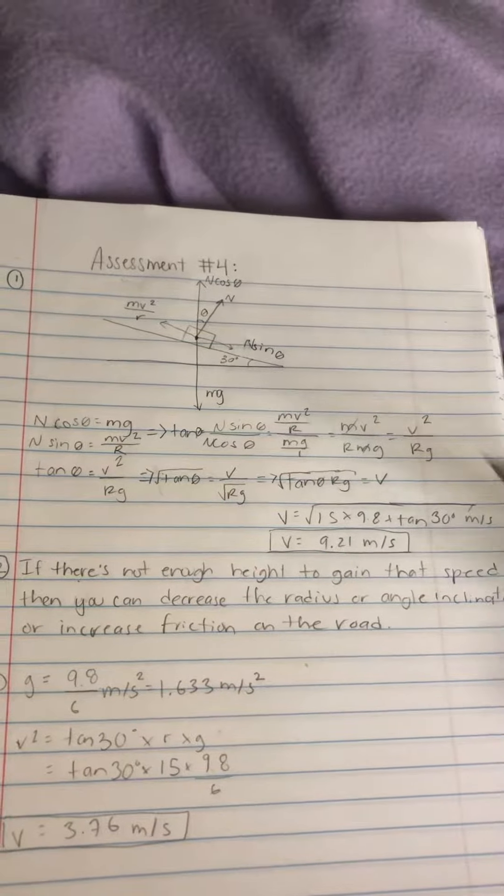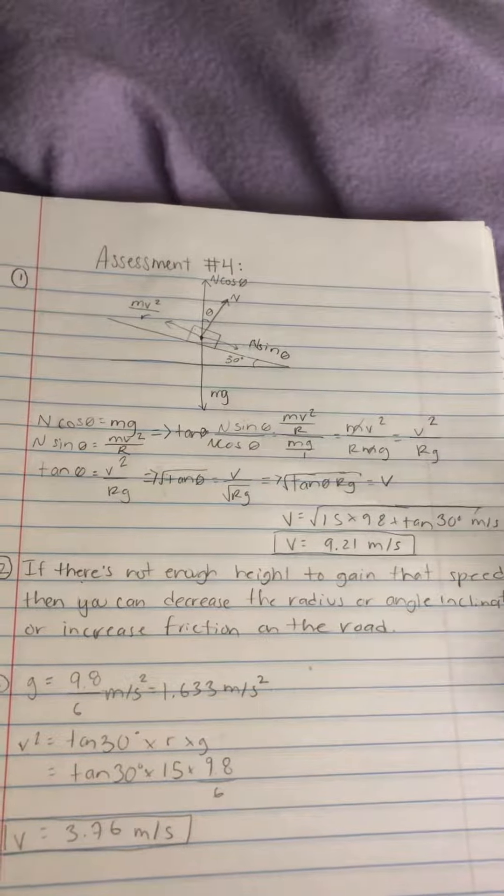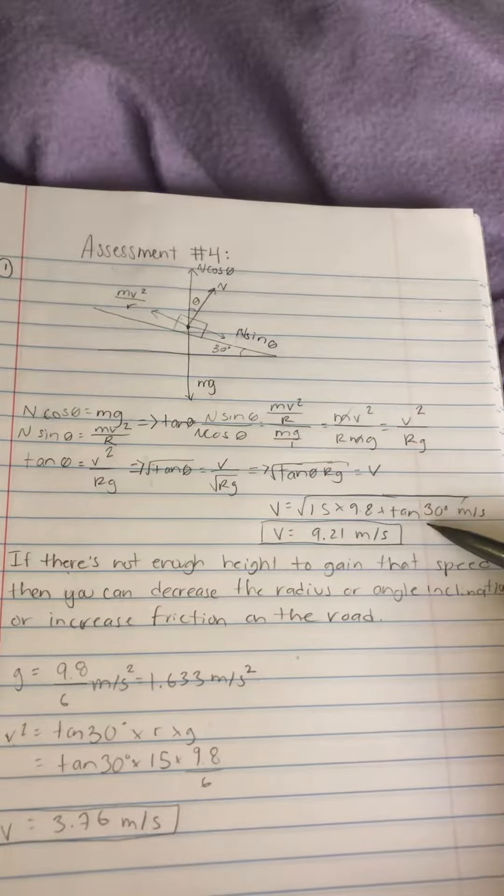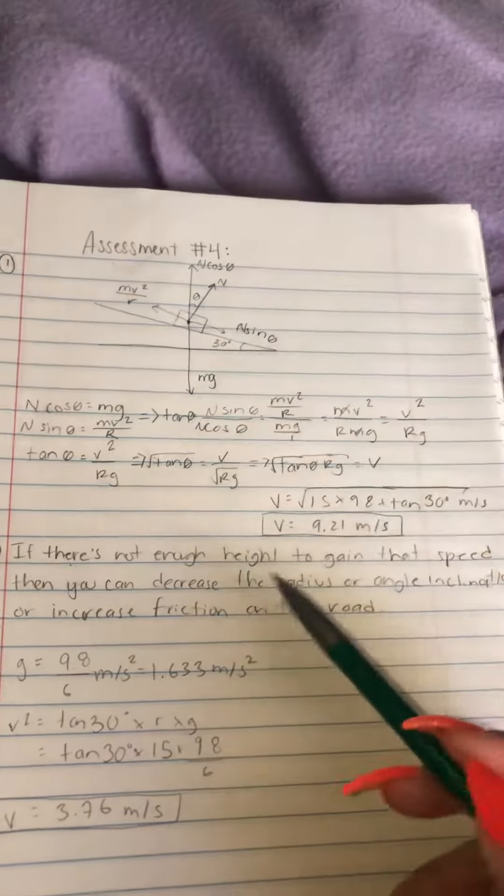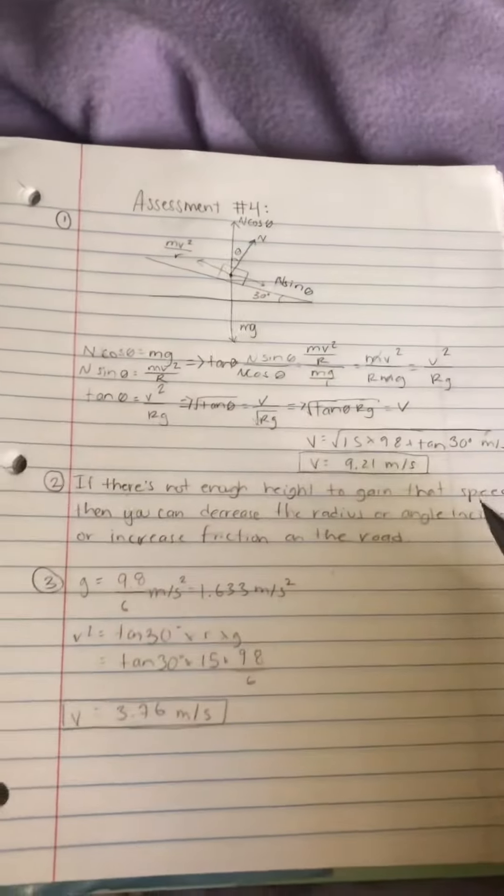We already know the radius. They give it to you, 15. Gravity is 9.8 times the inclination with tangent 30 degrees, and the velocity is 9.21 meters per second.